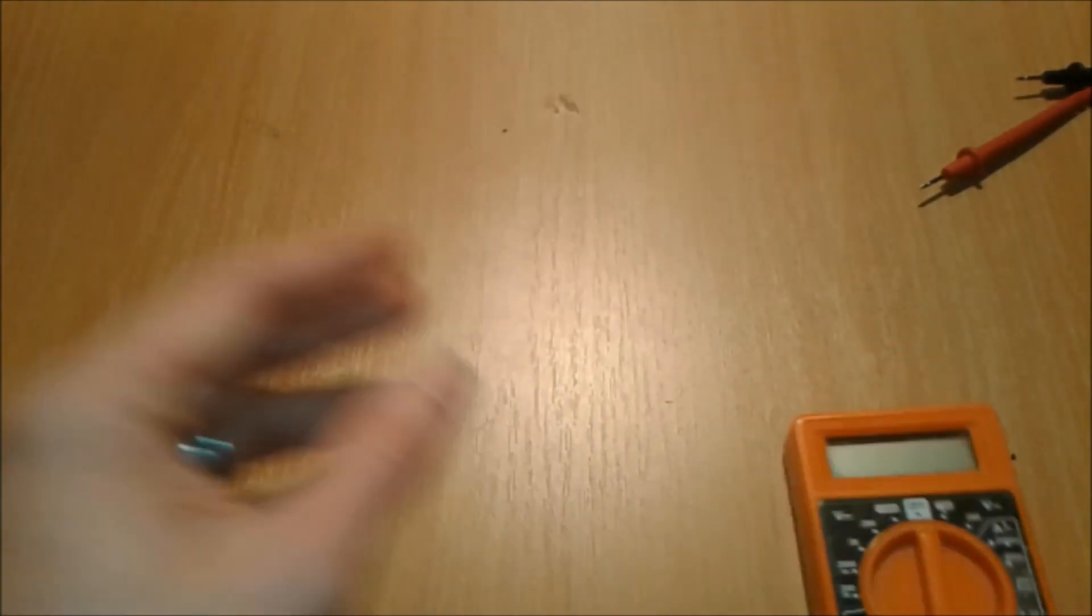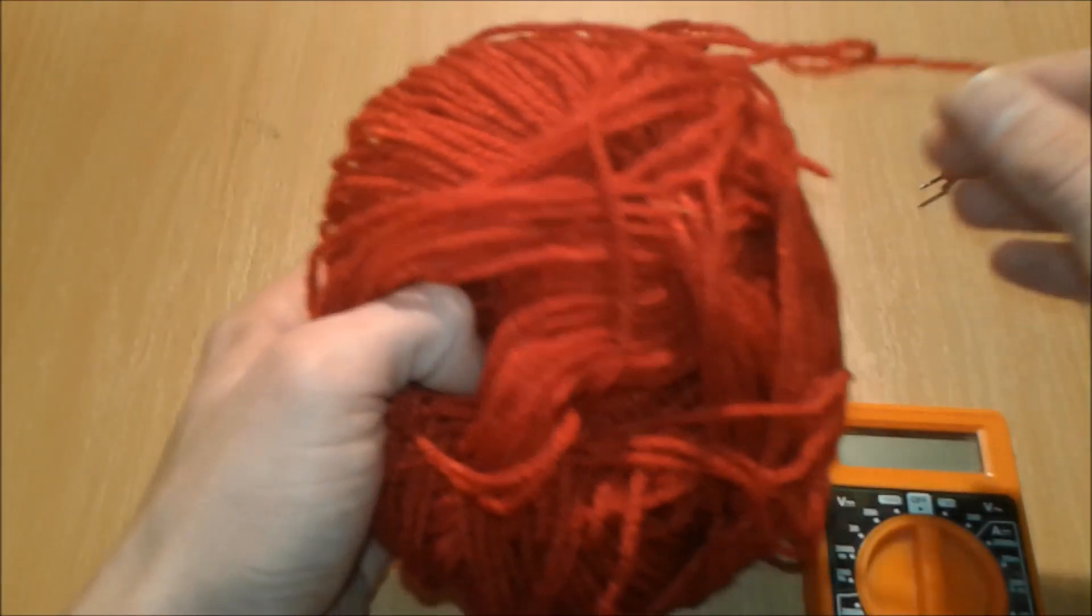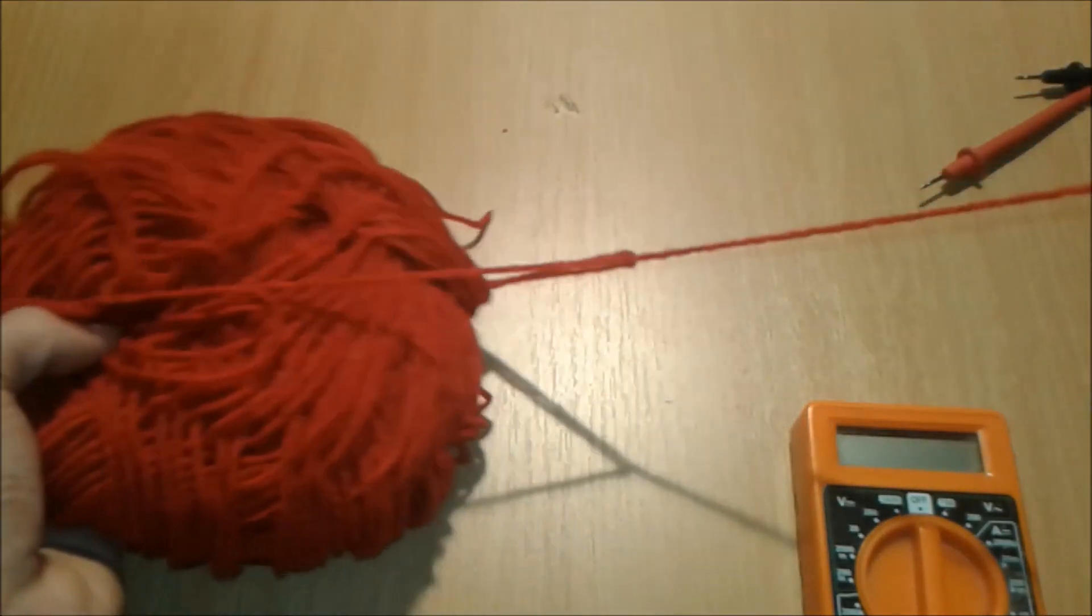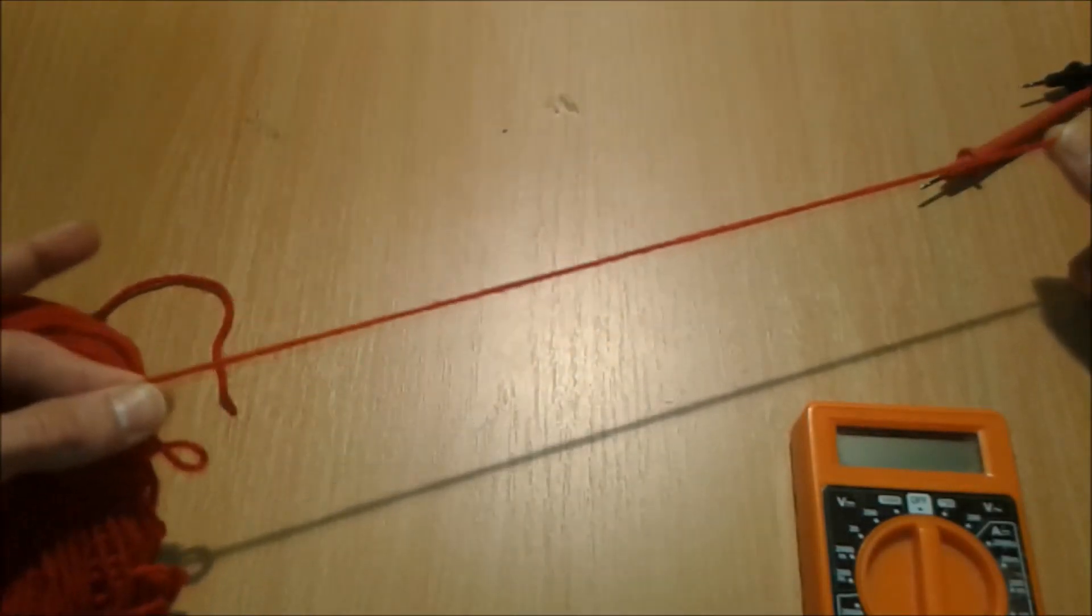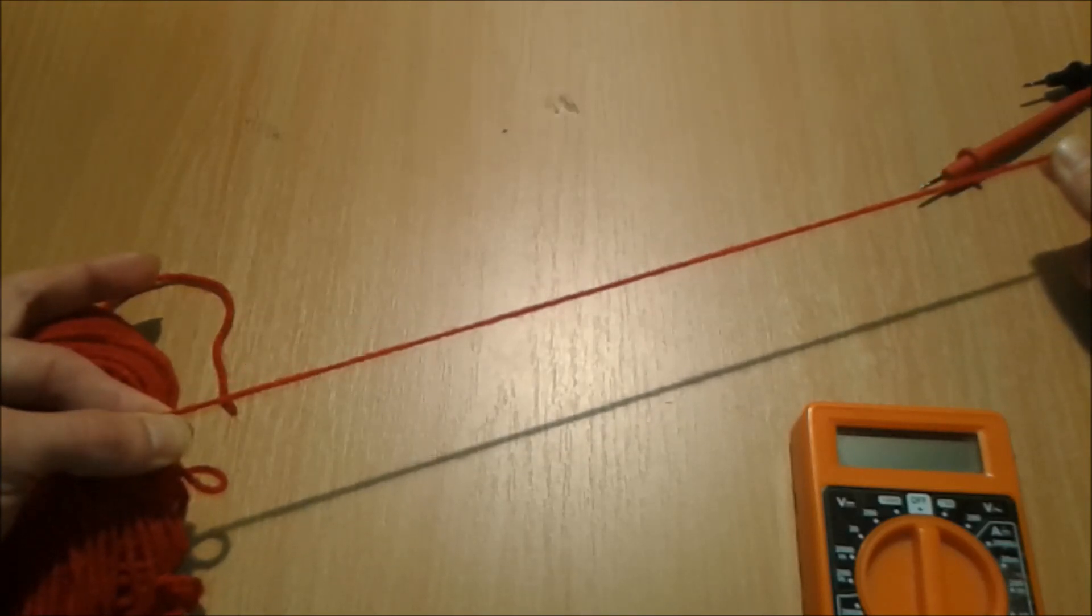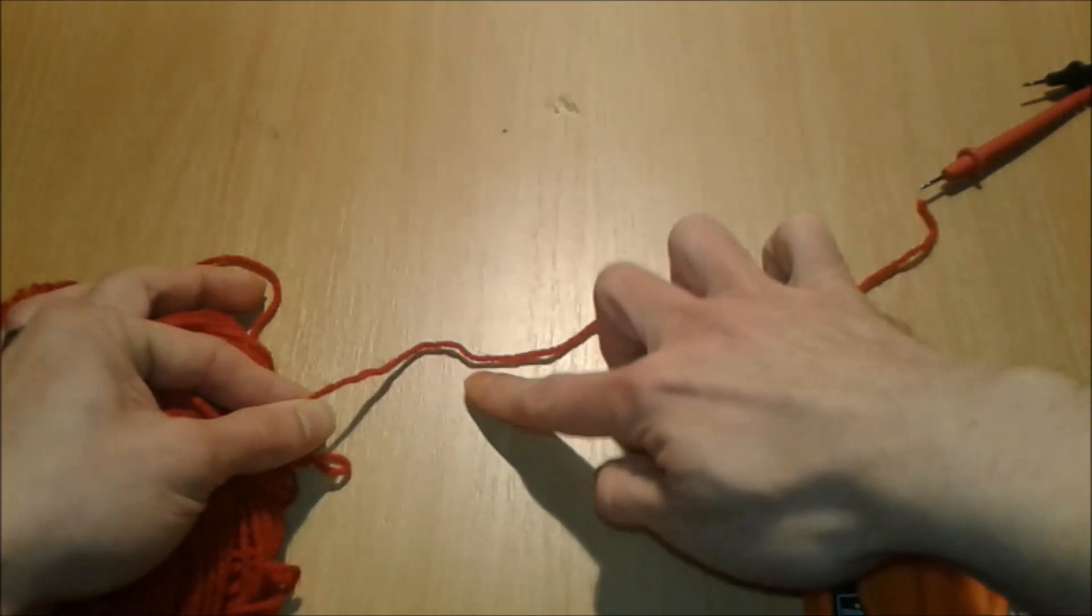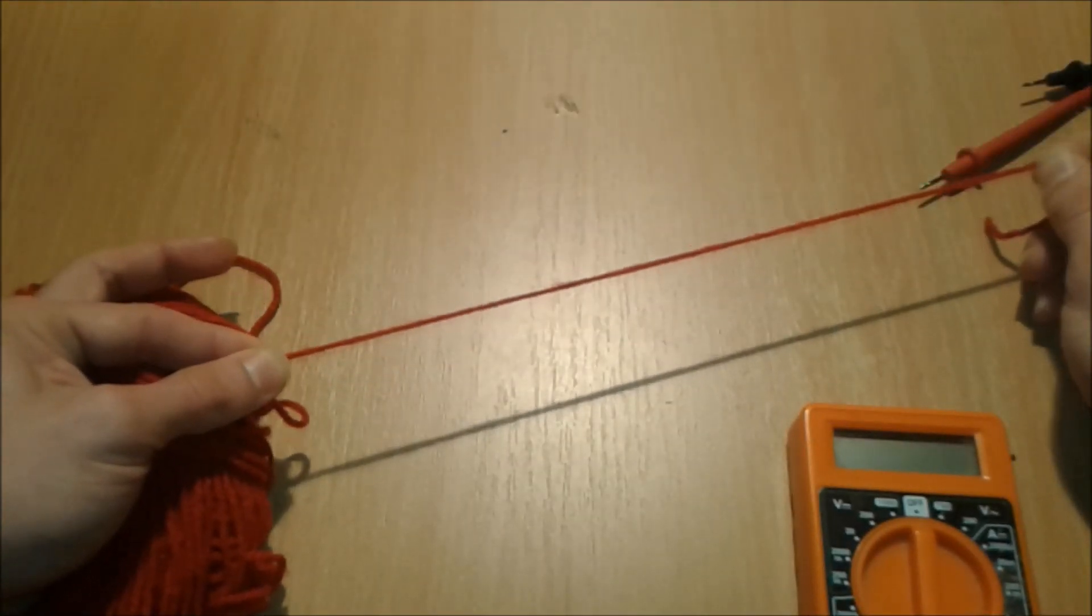First, think of continuity as a string of wire like this. Continuity means if this string of wire is in one piece we got continuity. If it's broken anywhere, that means we don't have continuity. This is straightforward.